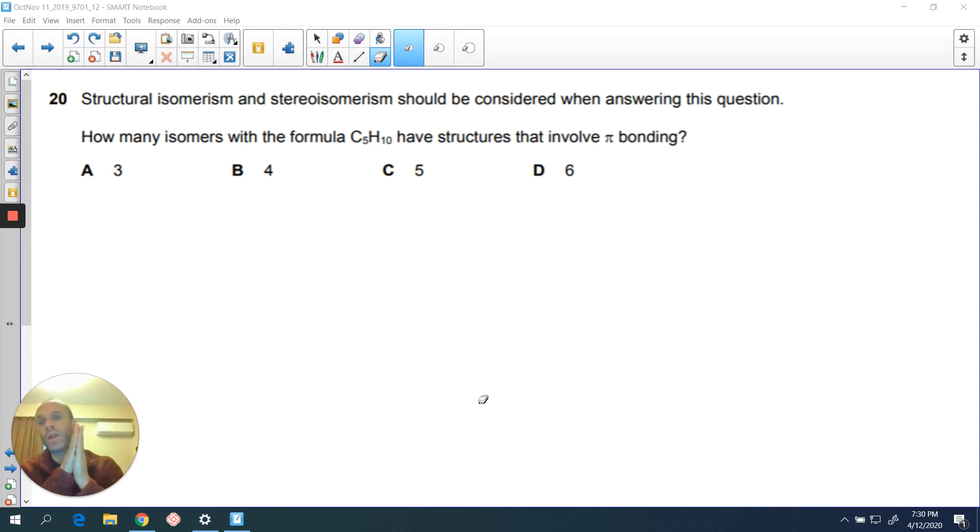Question 20. Structural isomerism and stereoisomerism should be considered when answering this question. How many isomers with the formula C5H10 have structures that involve pi bonding?